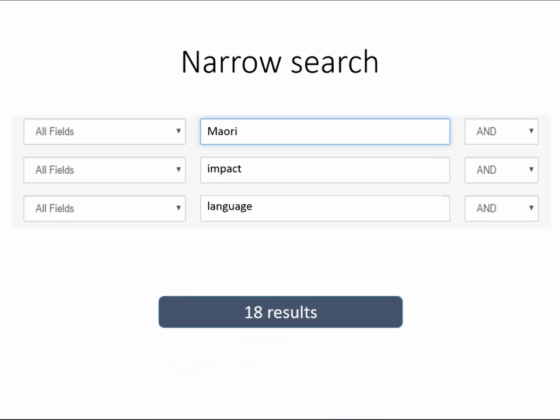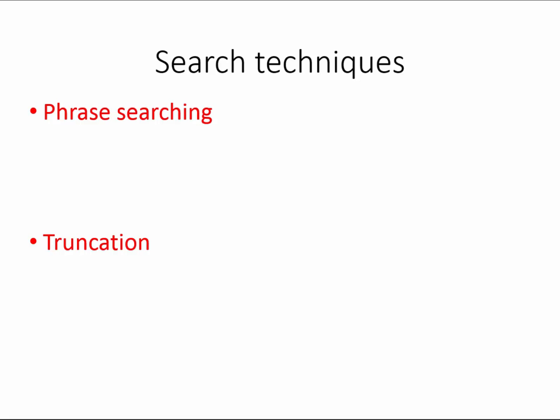Sometimes a search can be too narrow. If that is the case, then look at removing a keyword, changing a word, or changing the database that you are looking in. As well as using different keywords to narrow and broaden searches, there are a couple of useful techniques that can help.